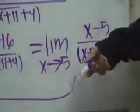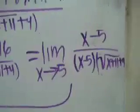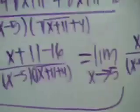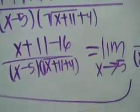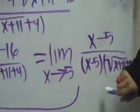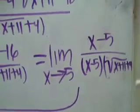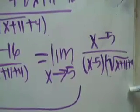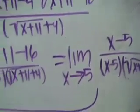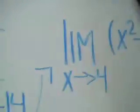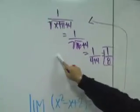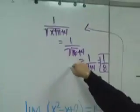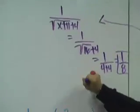That equals the limit as x approaches 5 of x minus 5 over x minus 5 times the square root of x plus 11 plus 4. We're not done — we have to simplify, and you get 1 over the square root of x plus 11 plus 4.